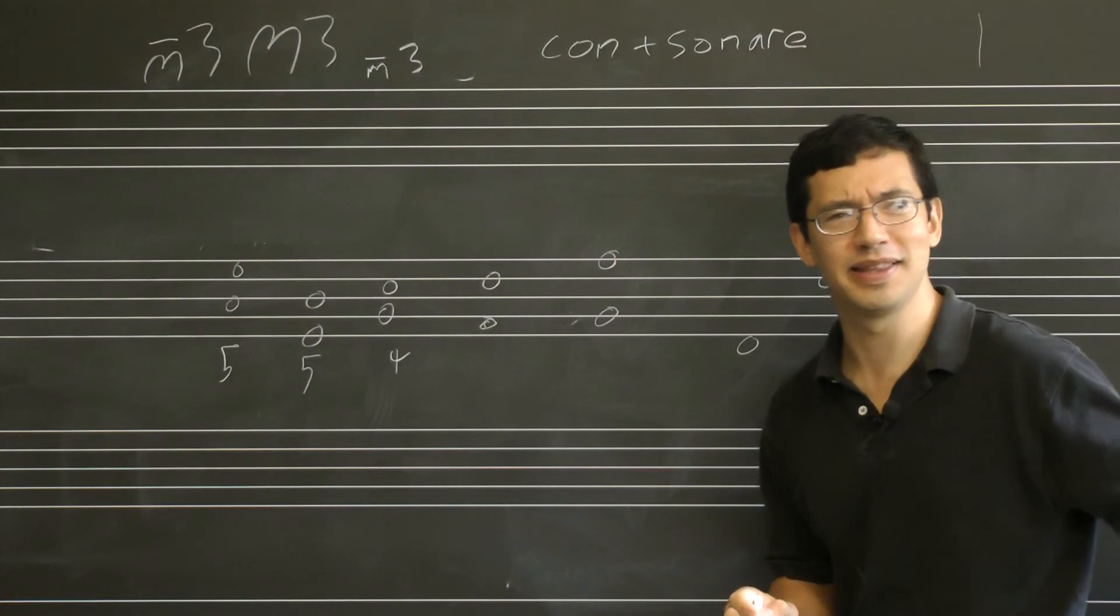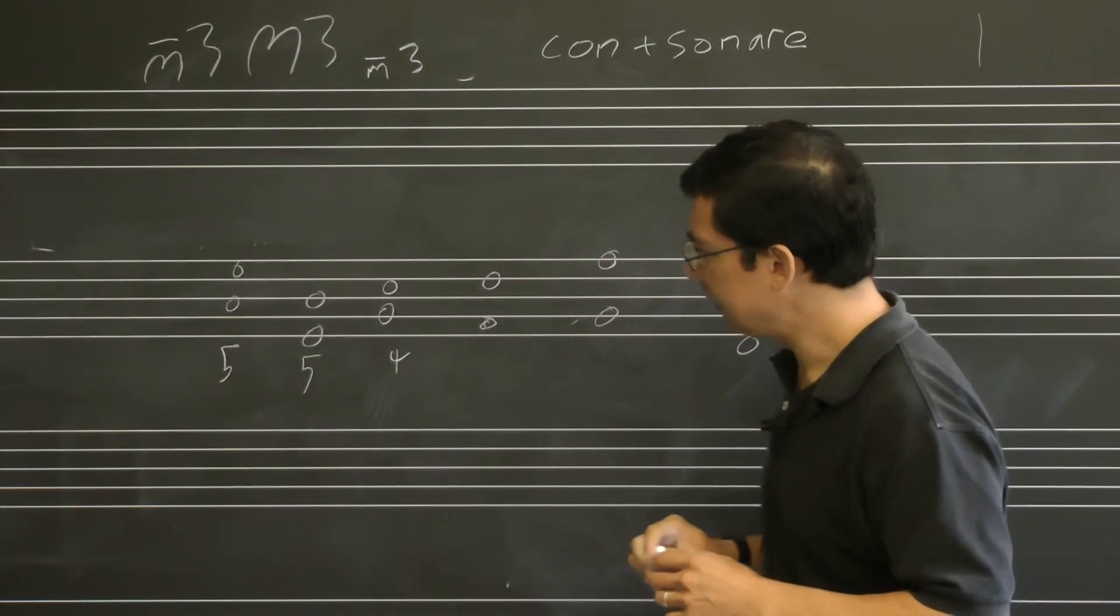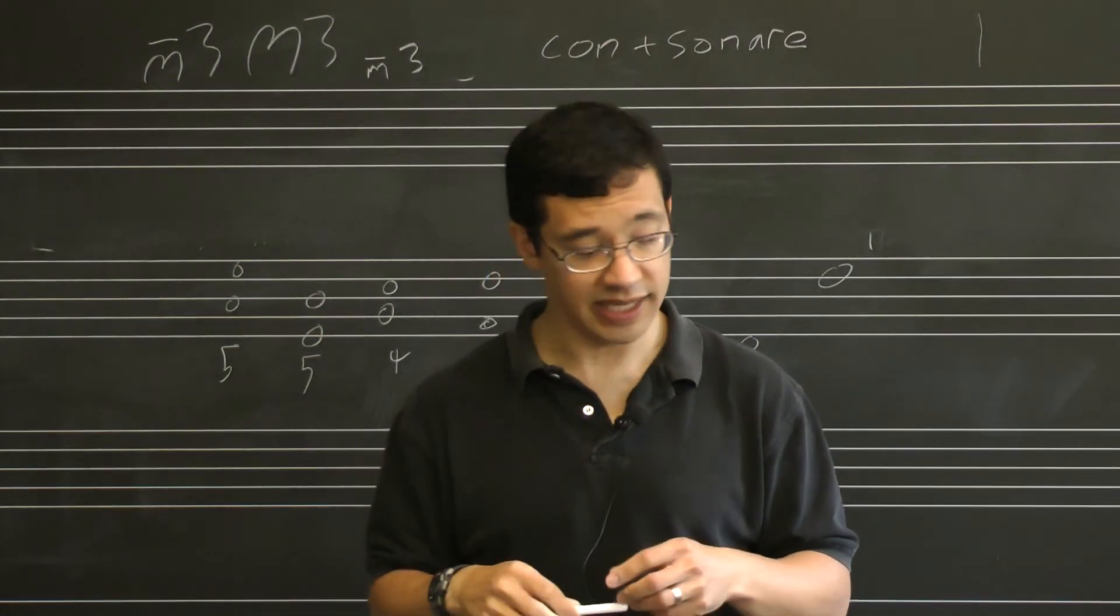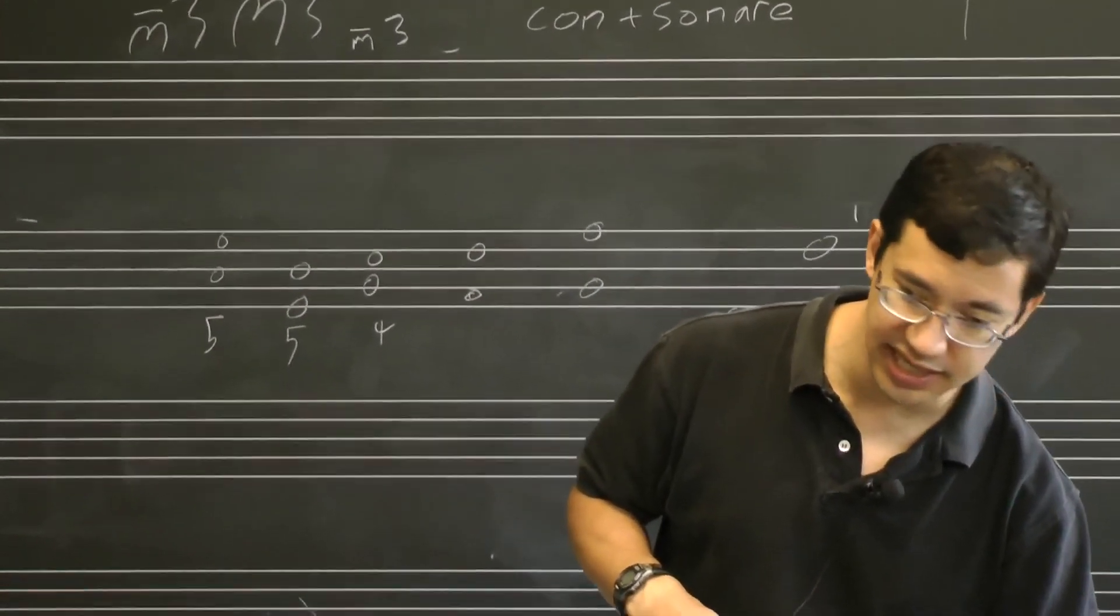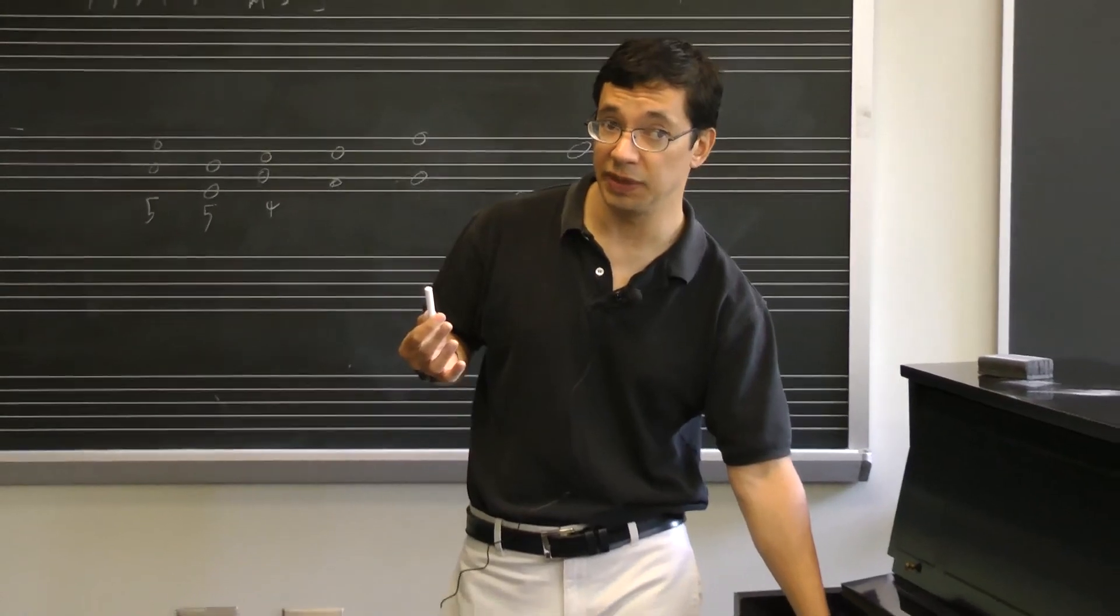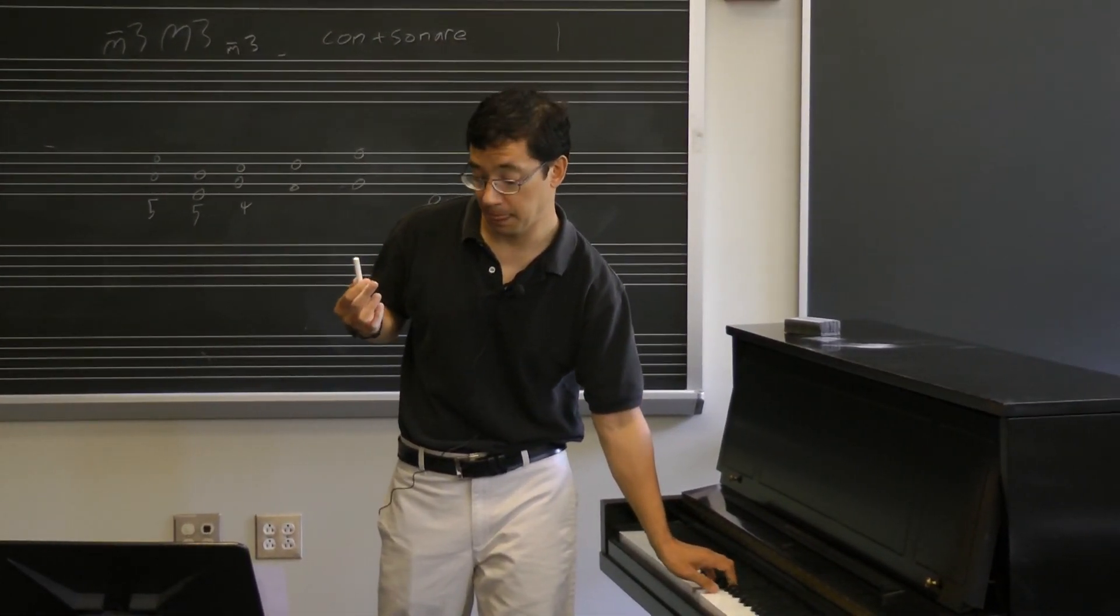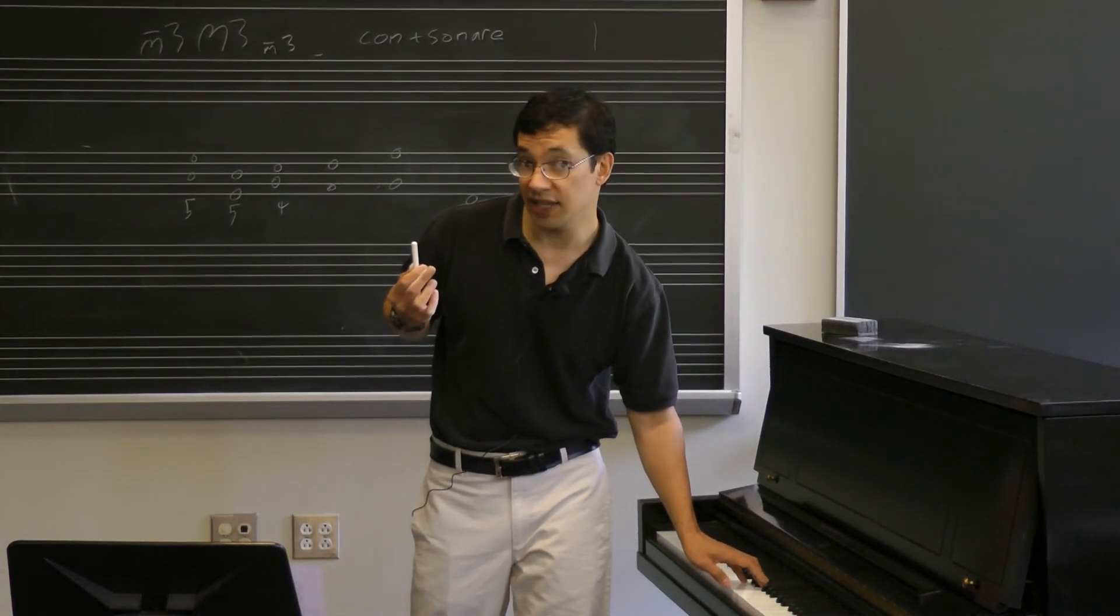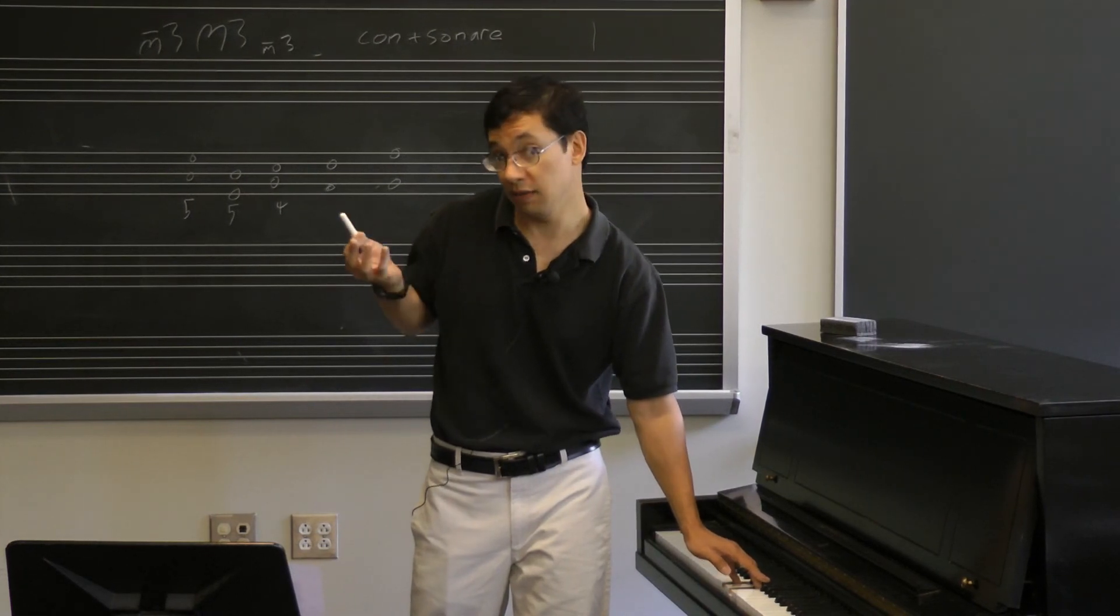I just realized, something that I should have said at the very beginning, although it crept into one of the other lessons: intervals are about pitch relationships, and they can come in two forms. When intervals are successive, like this, we call those melodic intervals, because you only get one note at a time, as in a melody. When you get two notes sounding at the same time, as in a harmony, you call those harmonic intervals.